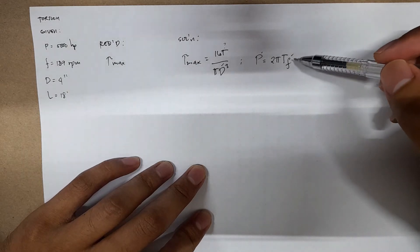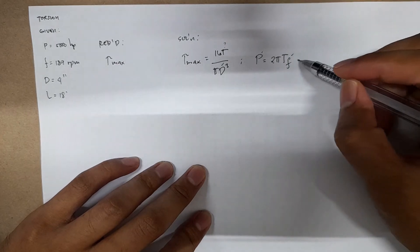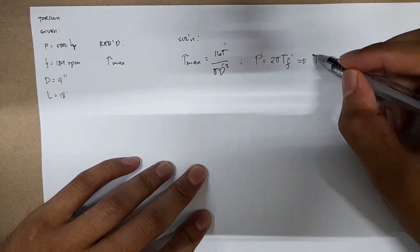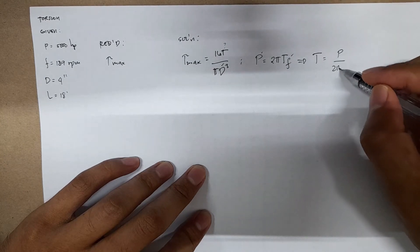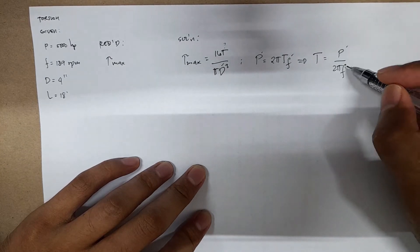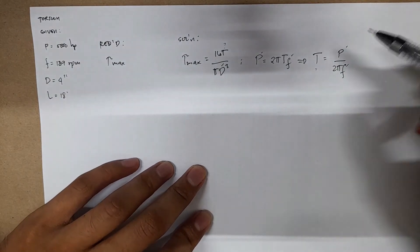We can actually have this as T equals P divided by 2 pi F. This one is given, and this one is given, so we can evaluate this to get your T or your torque.